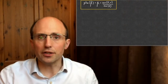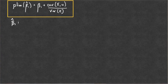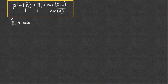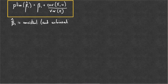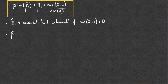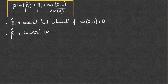To summarise: if the explanatory variable x is uncorrelated with the error term, the OLS estimator is consistent. And in fact, if x is uncorrelated with the error term, it is both consistent and unbiased. Flipping it around, if there is anything in the error term that is correlated with the explanatory variable, then OLS becomes both biased and inconsistent.